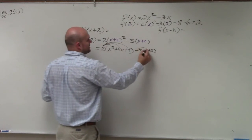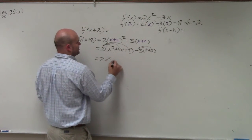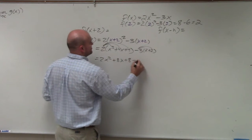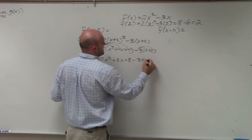Now you apply distributive property: 2x squared plus 8x plus 8 minus 3x minus 6.